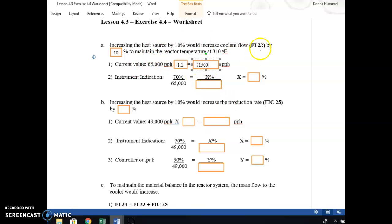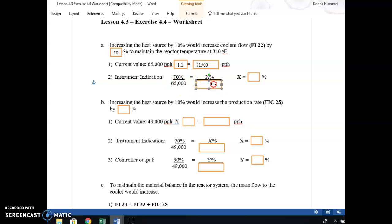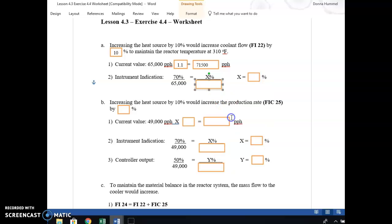Now, FI22 is also a controller output on the instrumentation. So now we just put this new number here. The ratio is we take what is the current number? The current factor is 70% on the indicator at 65. This is the normal operating conditions, but we've upped it, so we have our ratio. This new number is 71,500, so we put that in there, and when we do the math, we find that this number is equal to 77%. So that goes up, which makes sense.